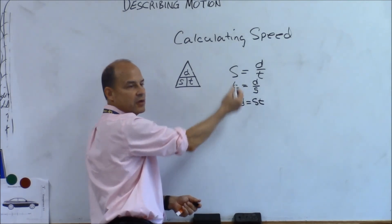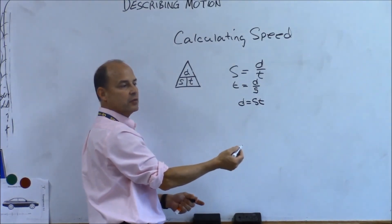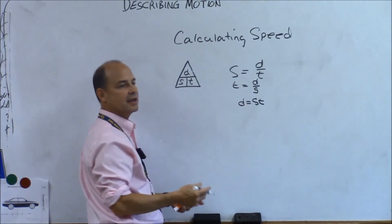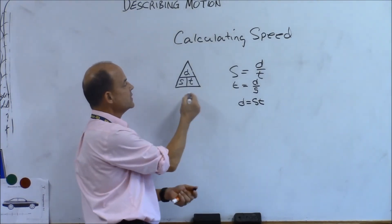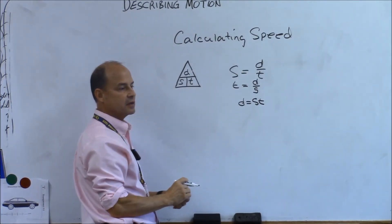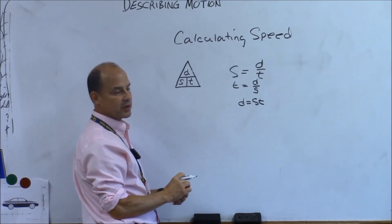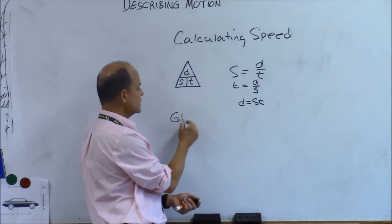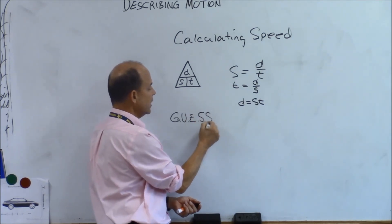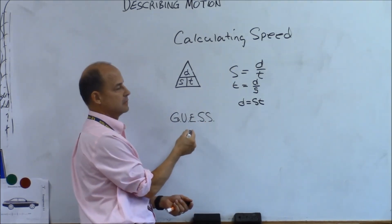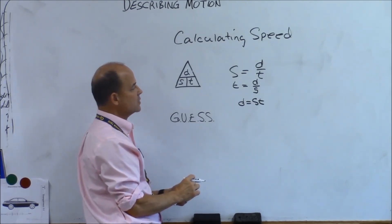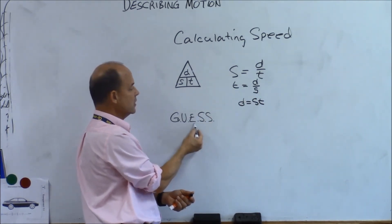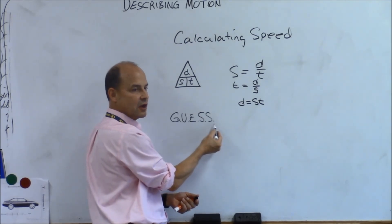You should have in your notes these three equations so you don't have to think when a question asks you for, say, distance given speed and time. It's a nice little gimmick. If I give you any two of these values, you should be able to solve for the unknown just by substituting into the equation.